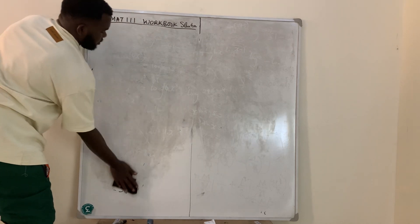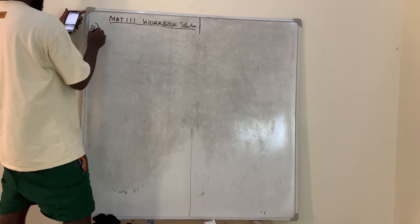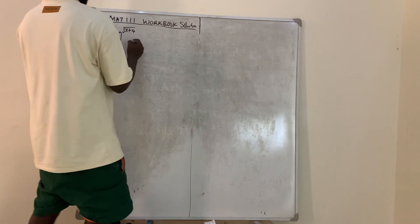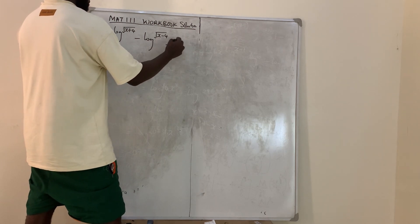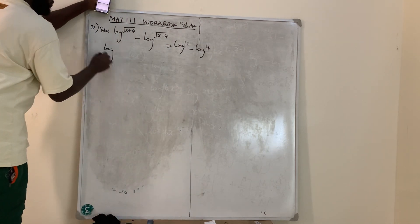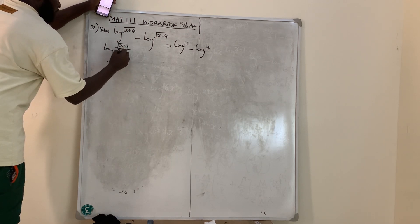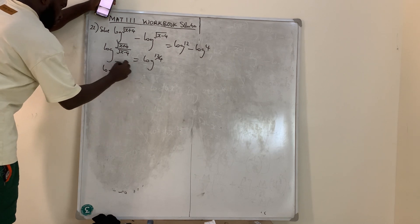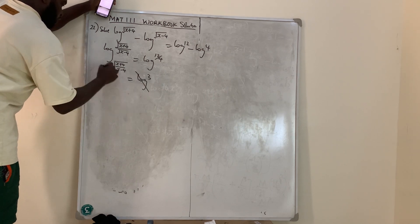Question number 22 says: solve log √(x+4) minus log √(x−4) equals log 12 minus log 4. According to the law of logarithms, subtraction means division, so we have log of √(x+4) over √(x−4) equals log of 12 divided by 4. This simplifies to log of √[(x+4)/(x−4)] equals log 3.